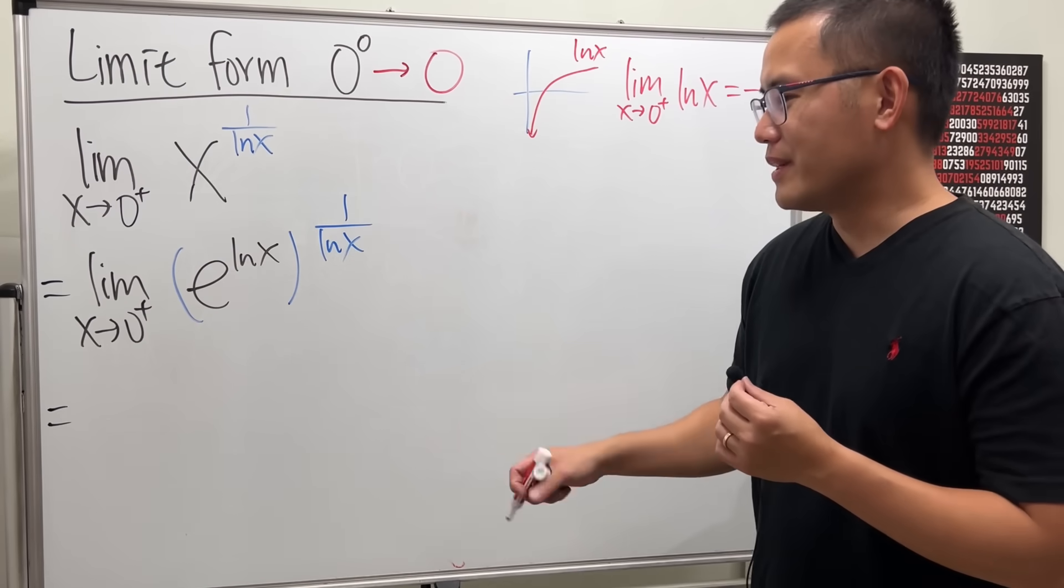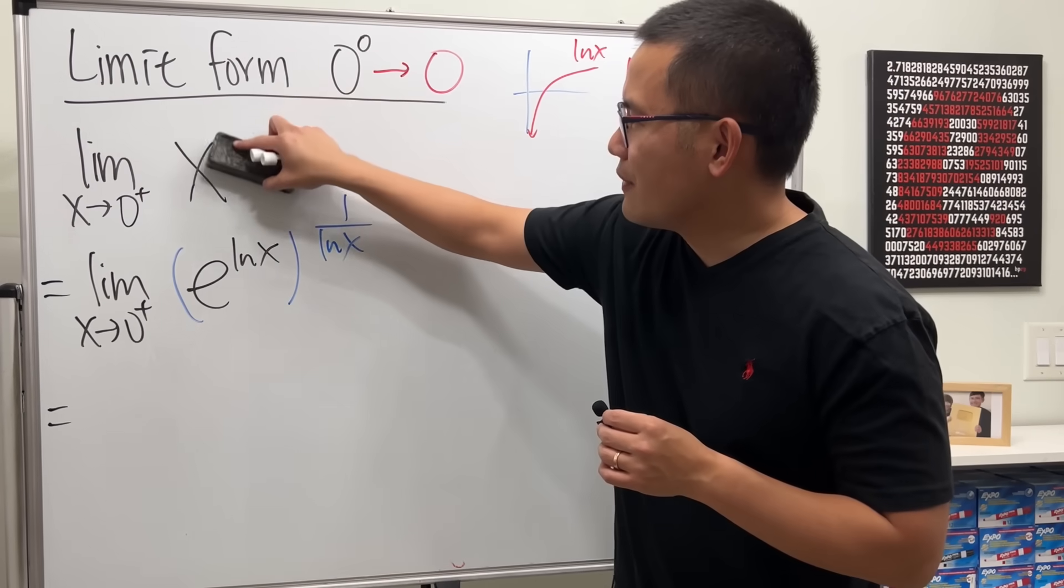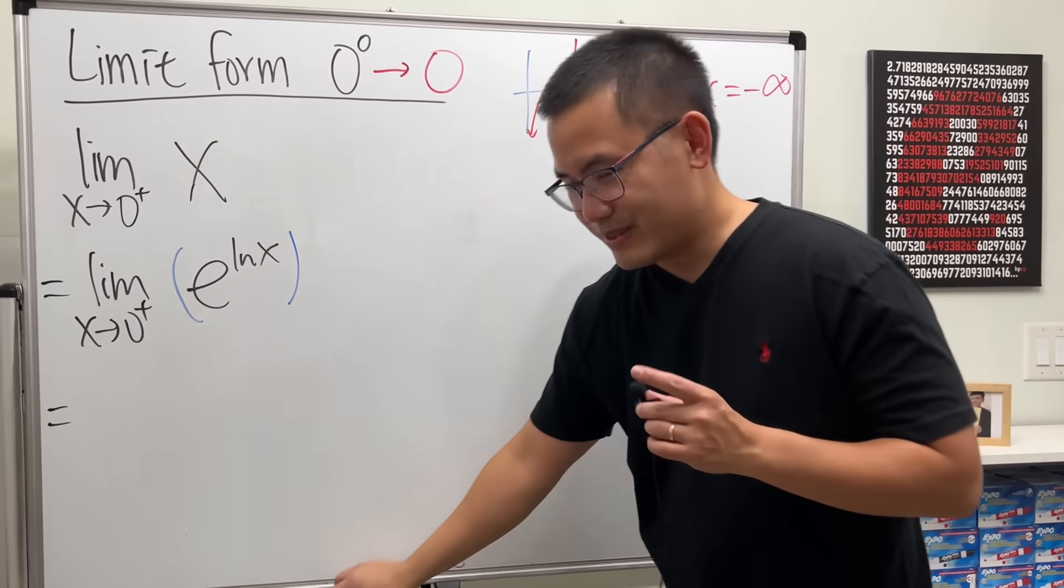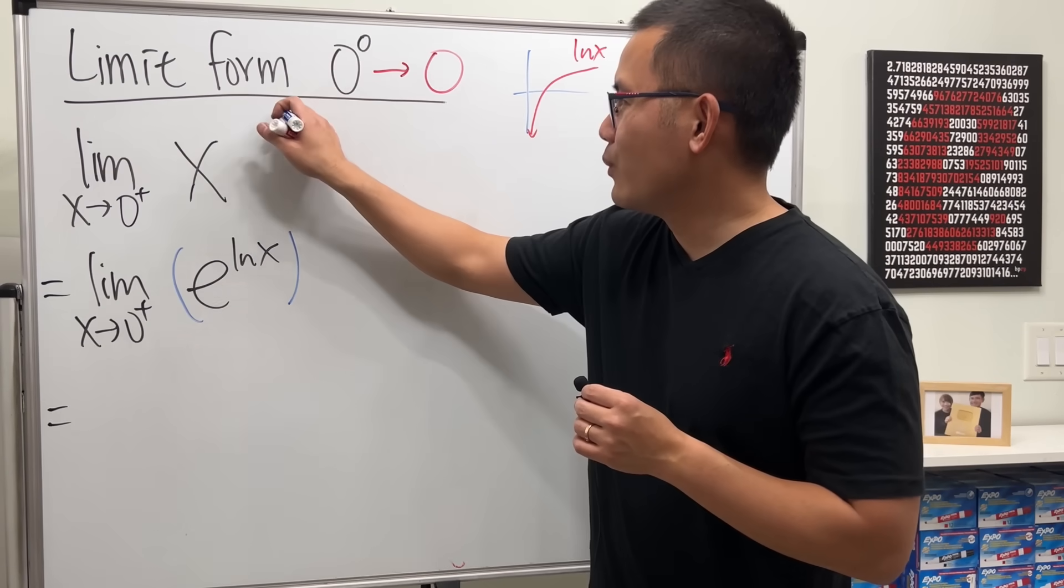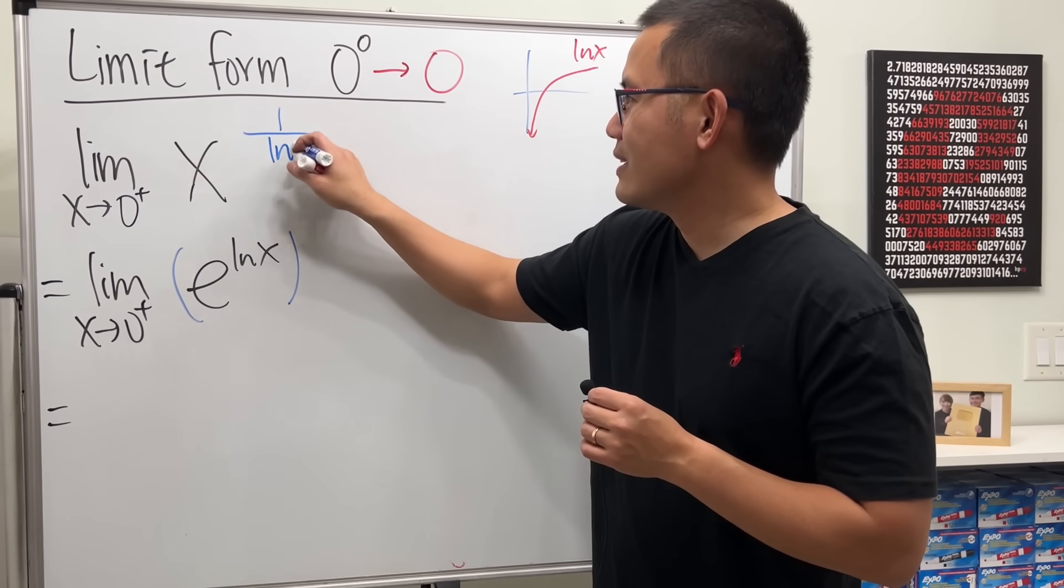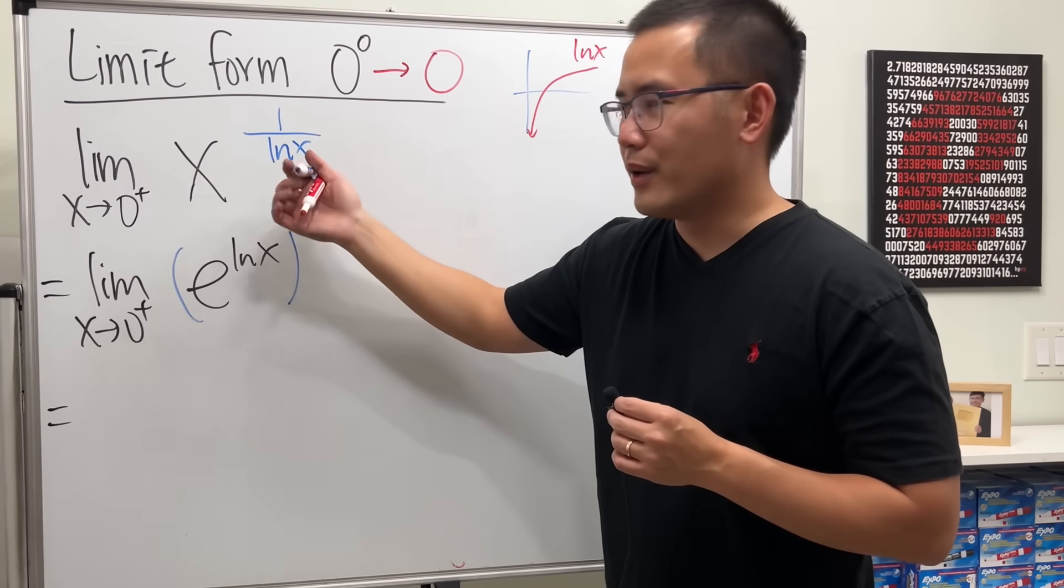So how do I make it even bigger? Now check this out. Instead of lnx, ready, this is what I did. Instead of lnx, yeah I have lnx here, let's take another ln. How's that? ln lnx.